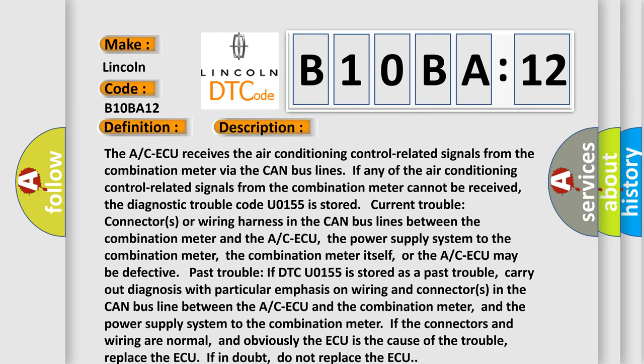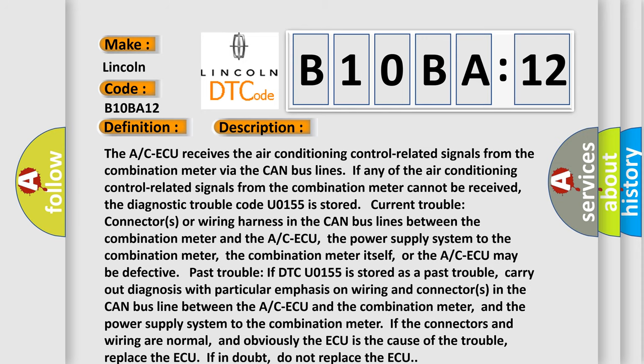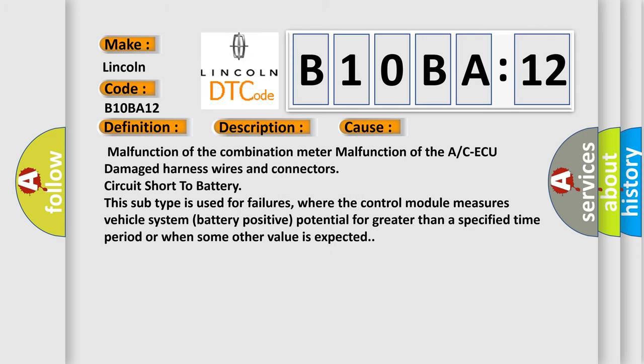This diagnostic error occurs most often in these cases: Malfunction of the combination meter, malfunction of the ACAQ, damaged harness wires and connectors, circuit short to battery. This subtype is used for failures where the control module measures vehicle system battery positive potential for greater than a specified time period or when some other value is expected.